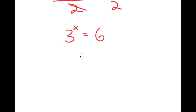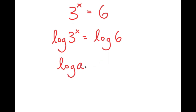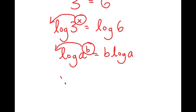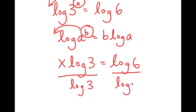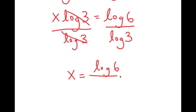From here, I take the log on both sides: log of 3 to the power of x equals log 6. Using the rule that log a^b equals b times log a, I move x to the front: x times log 3 equals log 6. Dividing both sides by log 3, these cancel out and I get x equals log 6 over log 3.